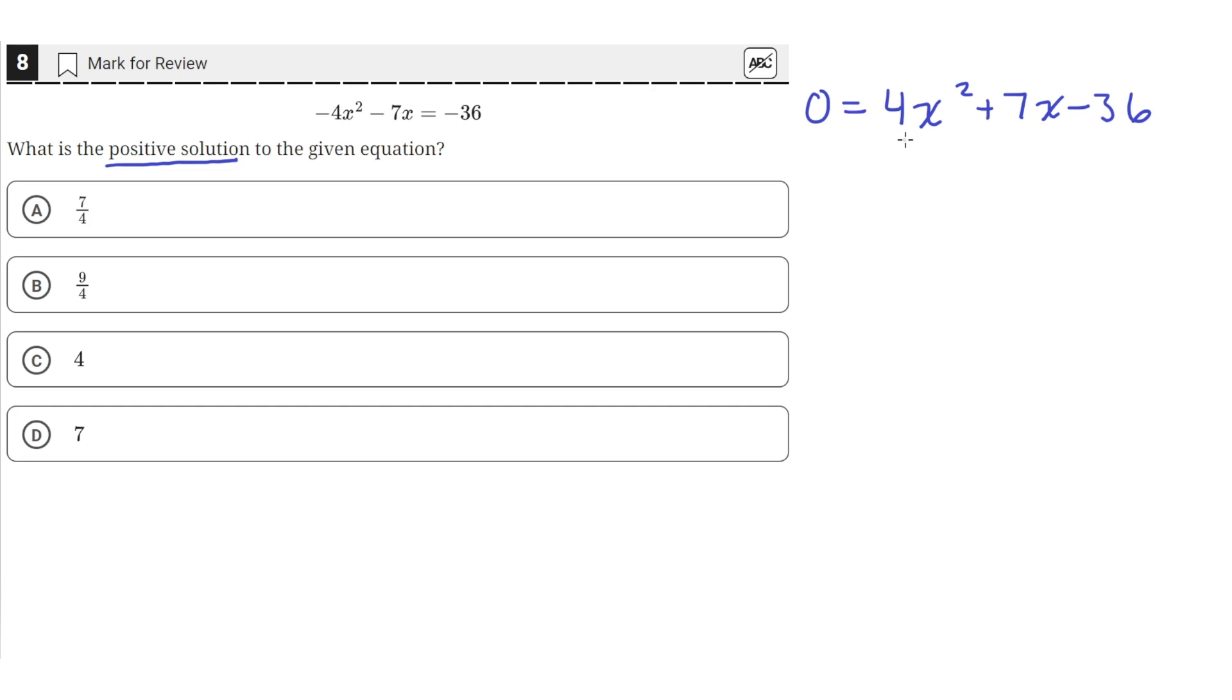Okay, so this looks like a factorable quadratic, so we'll try and factor this. In order to factor this, we first multiply the a term, which is the coefficient of x squared, and the c term, which is the constant.